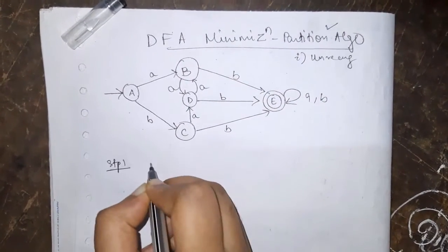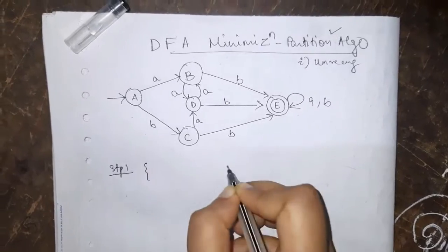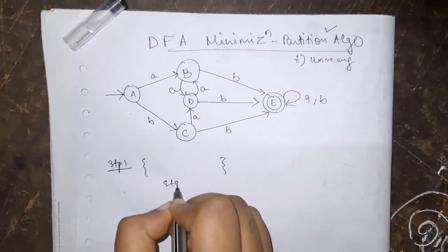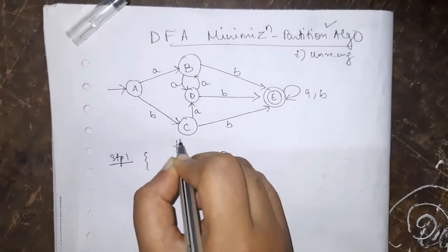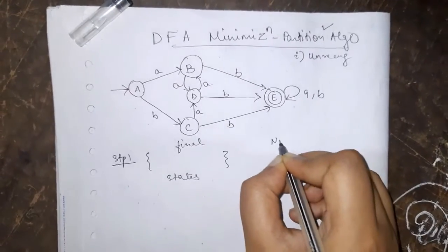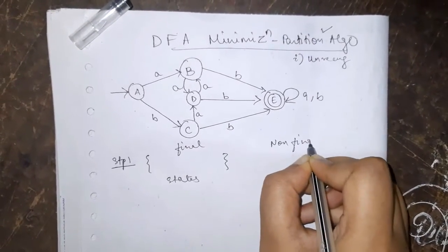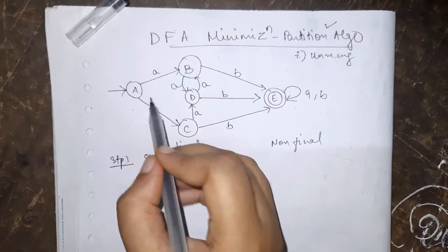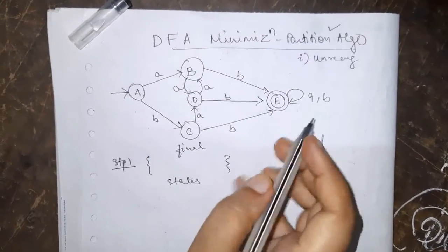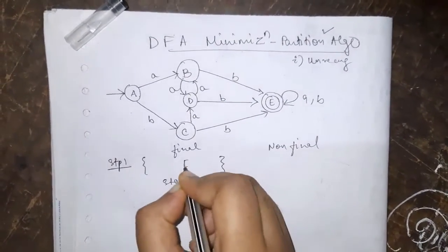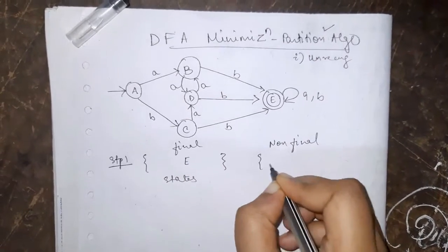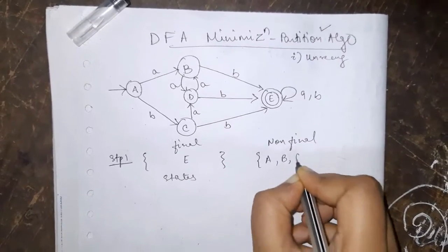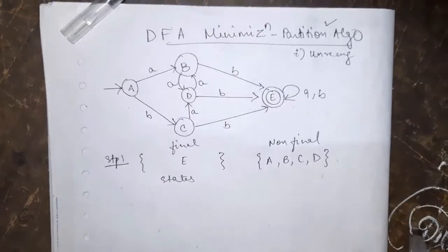Step 1 is to partition or group the states on the basis of final and non-final. This is the first step. So what states we are having? A, B, C, D, E. Only E is the final state. Non-final are A, B, C and D.